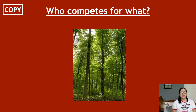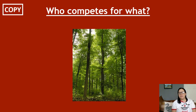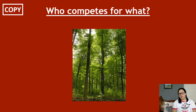Animals compete for these things: food, water, space, shelter, and mates — we're talking about breeding partners for that one. Plants compete for light, water, minerals in the soil, space, and nutrients in the soil as well. Minerals and nutrients are slightly different things.